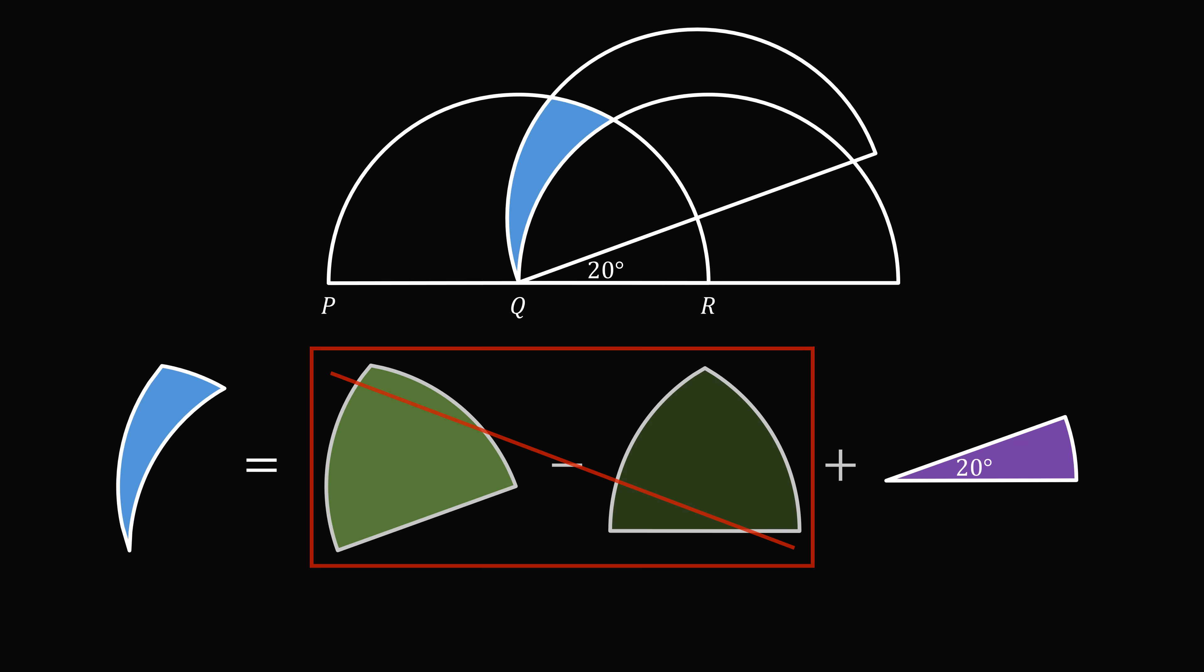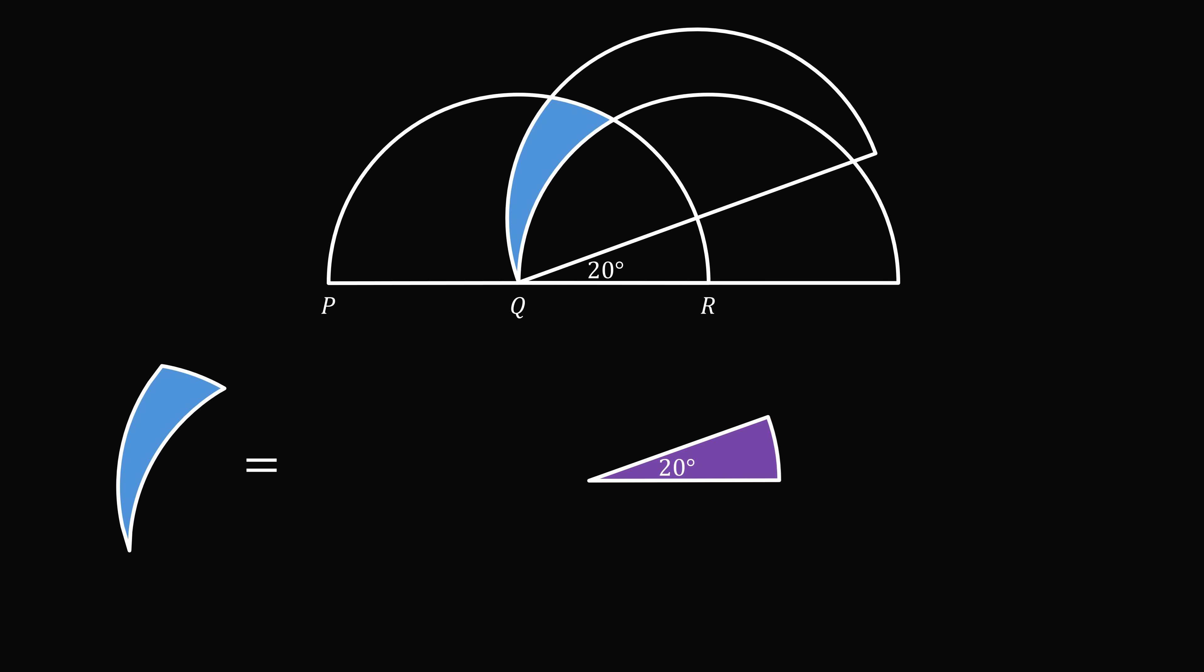So, the area of this claw is exactly equal to the area of a circular sector that has a central angle of 20 degrees. Now, we were given that each semicircle has an area equal to 72, and each semicircle spans 180 degrees. So, this area is equal to the area of a semicircle multiplied by 20 over 180, and that equals 72 multiplied by 1 over 9, which is equal to 8. And that's the answer!